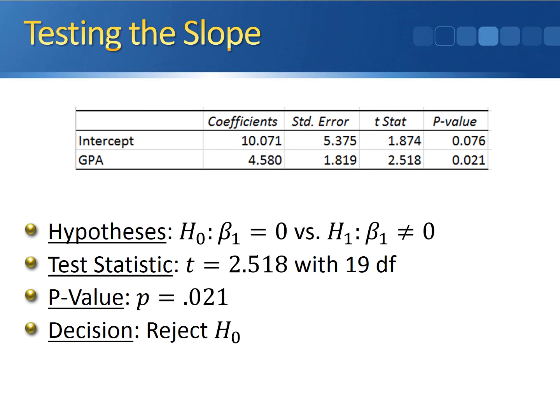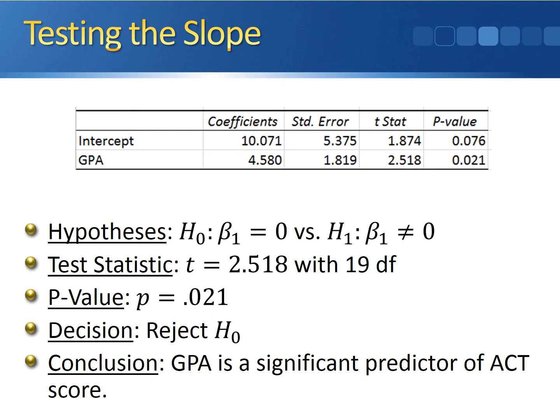The decision that we're going to make is to reject the null hypothesis because our p-value is less than 0.05. And so the conclusion that we can come to is that GPA is a significant predictor of ACT score. The slope of the regression line is significantly different from 0, so we conclude that our predictor variable GPA does significantly help us predict ACT score.